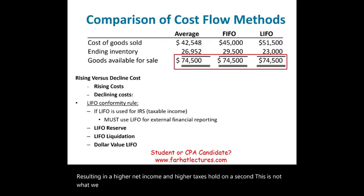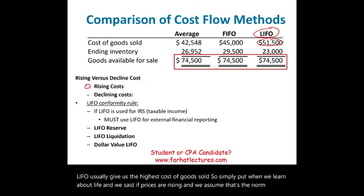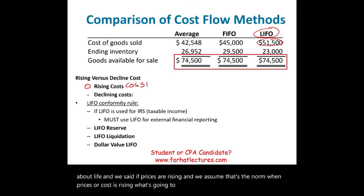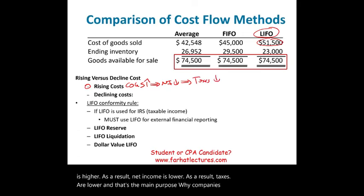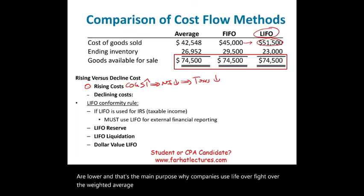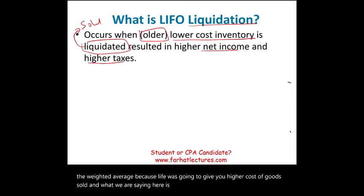This is not what we typically learn about LIFO. Normally, LIFO gives us the highest cost of goods sold. When prices are rising, cost of goods sold is higher, net income is lower, and taxes are lower. That's the main purpose why companies use LIFO. But LIFO liquidation, when it occurs, results in higher net income and higher taxes.